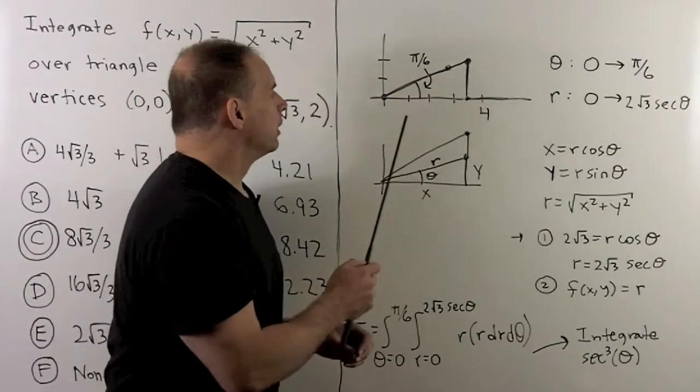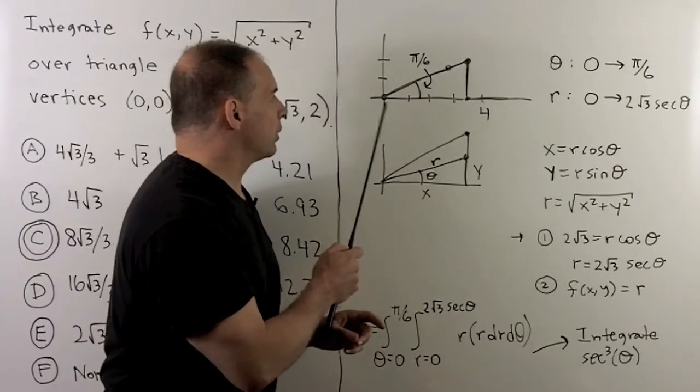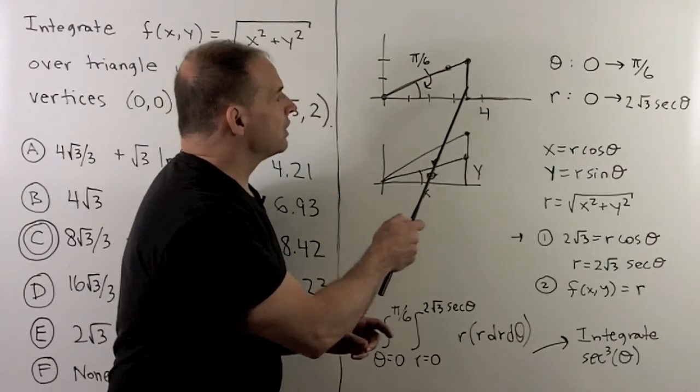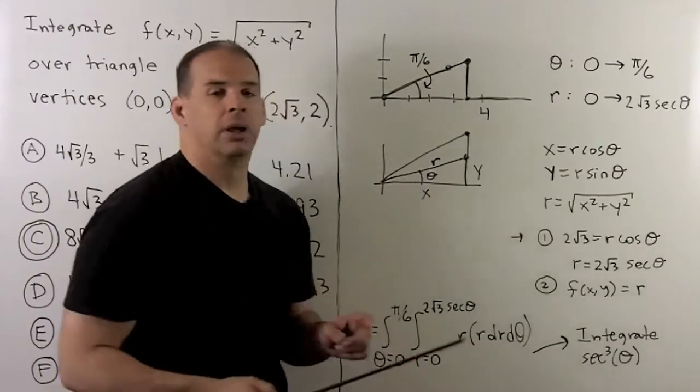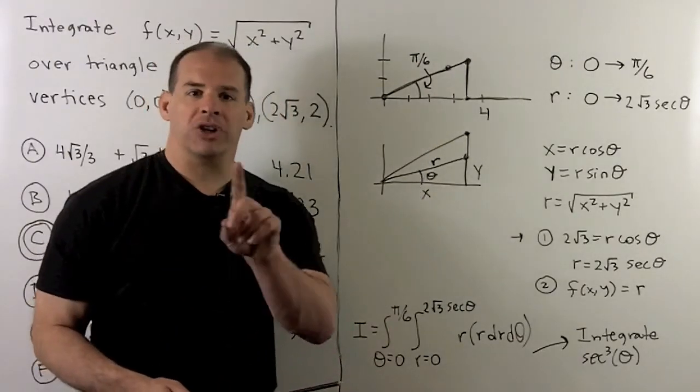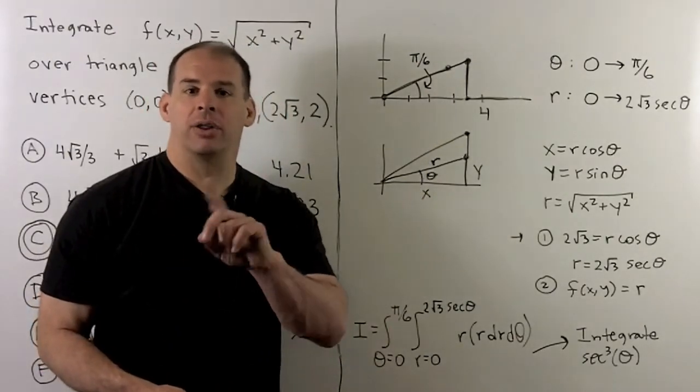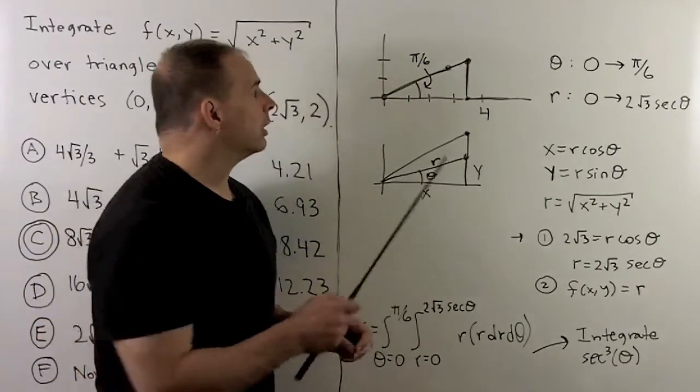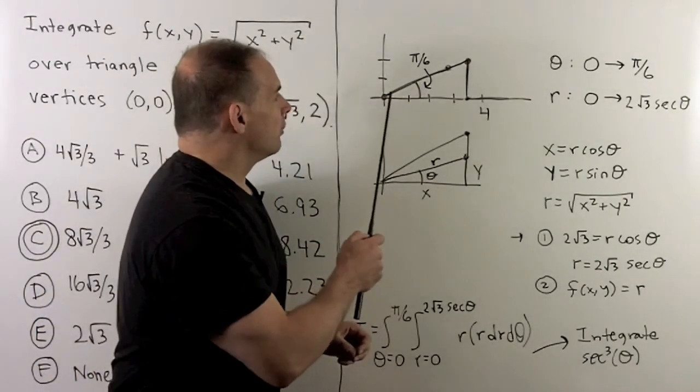If we draw our picture, we have a triangle with vertices (0,0), (2√3, 0), (2√3, 2). I want to find ranges for the angles and the radii. Now, for the angles, if we just do our trig, we see that this is going to go from 0 to π over 6.